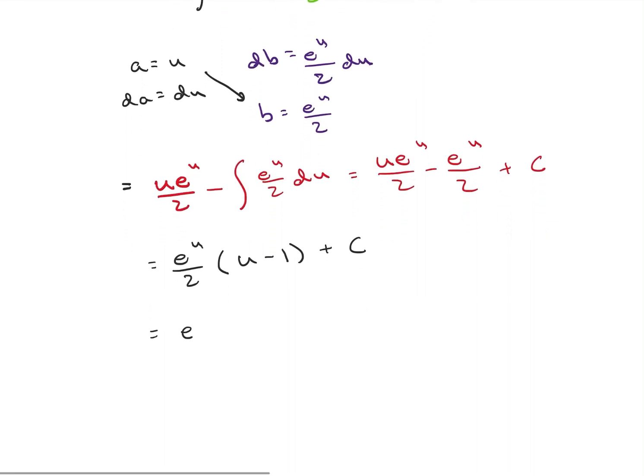We're going to get e to the x squared over 2 times x squared minus 1 plus an integrating constant. And that gives us our final solution.